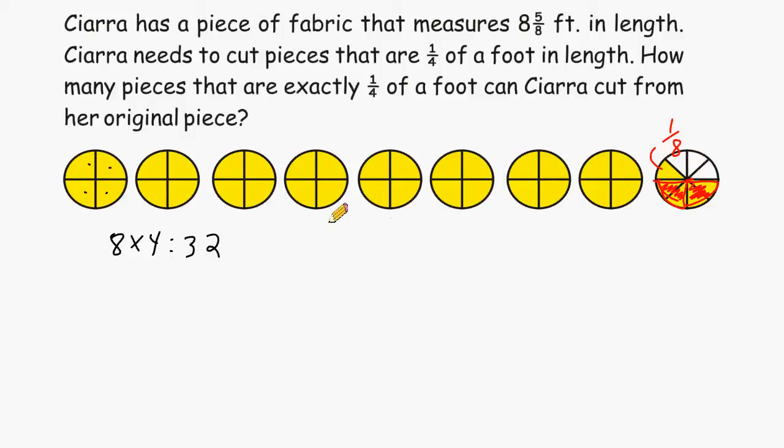So out of all of the whole circles or the eight whole feet we can get 32 quarters. And then we add these two extra quarters here on the end. And 32 plus two more quarters gives us a total of 34. So we can say that Ciarra can cut 34 pieces of fabric that are exactly 1/4 of a foot in length.